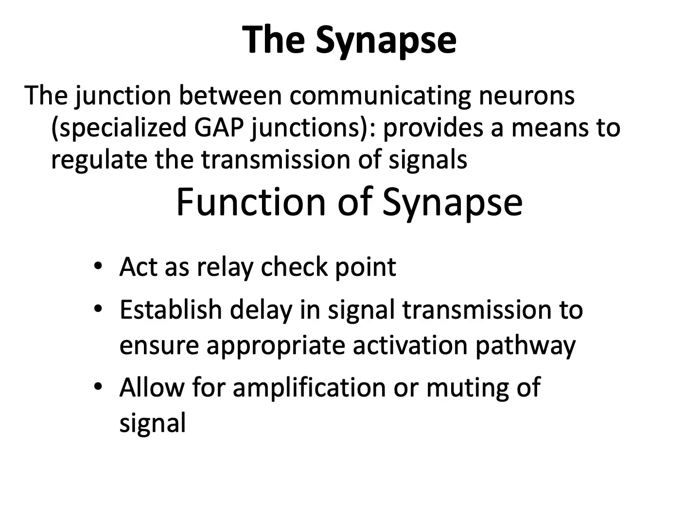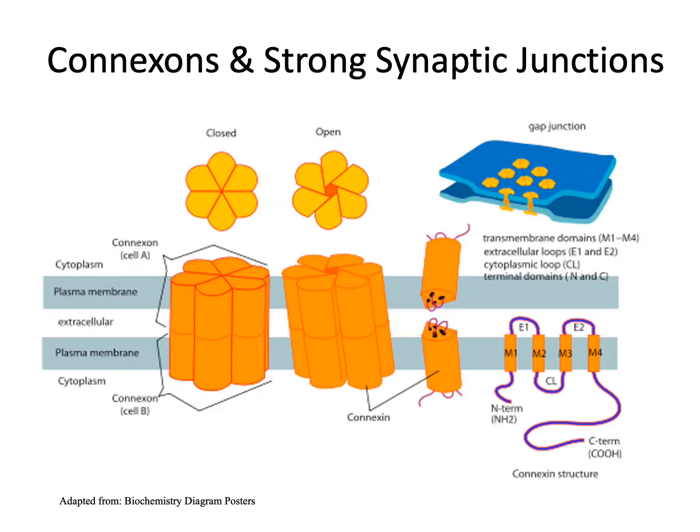The synapse will allow for either amplification of the signal — a greater output — or a muting of the signal, a reduction of output along the pathway. The synapse itself is held in place by a series of proteins known as connexons that hold the membranes in proximity to each other and can function as a pore between two neurons in the formation of strong electrical synaptic function.